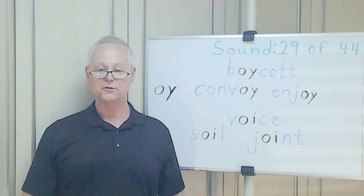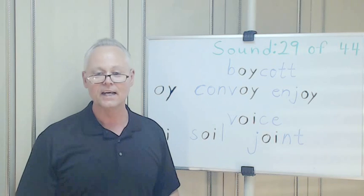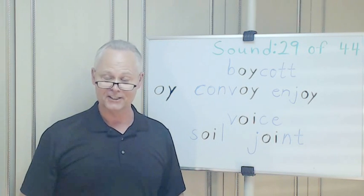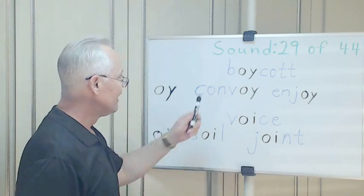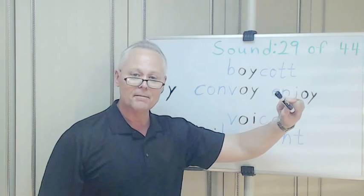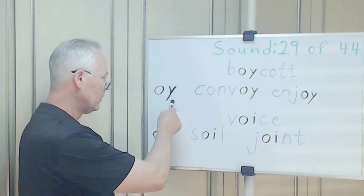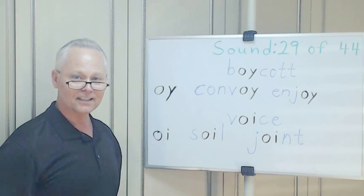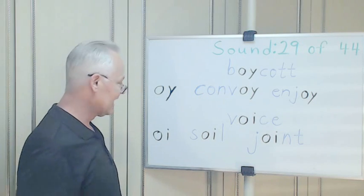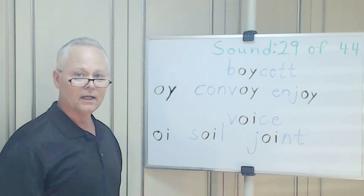Hello and welcome to Speak American English with Lyman Holton. My name is Lyman Holton. In this lesson we're going to talk about American English pronunciation. Are you ready? Let's begin. Sound 29 of the 44 sounds that make up American English. Here we have two vowel combinations: 'oy' and 'oi' — both make the same sound, as in 'boy.'